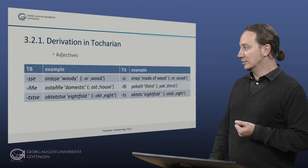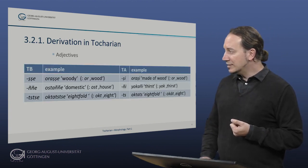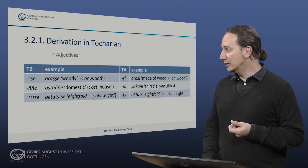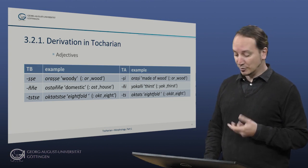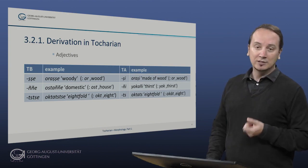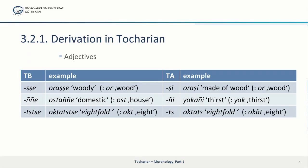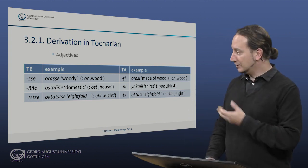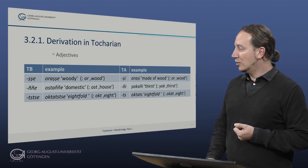Let's look at adjectives. These are three of the most productive suffixes and they play a role in building secondary adjectives from various stems. We have 'orashe' meaning woody, derived from 'or' meaning wood, and its cognate in Tocharian A. We have 'ostanje' meaning domestic, derived from 'ost' meaning house, and 'yokanyi' meaning thirsty in Tocharian A. We also have 'octatze' meaning eightfold and its cognate in Tocharian A, 'octats', also meaning eightfold.